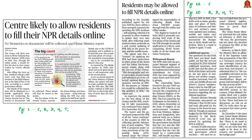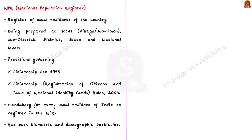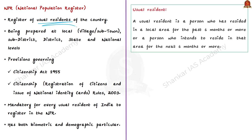The next discussion is about the National Population Register (NPR). The new development is that the Centre has allowed residents to fill the NPR form on their own through the online mode. NPR is a register of usual residents of the country — a usual resident being a person who has resided in a local area for the past six months or more, or a person who intends to reside in that area for the next six months or more. This includes both citizens and non-citizens.